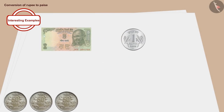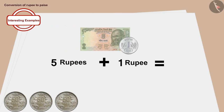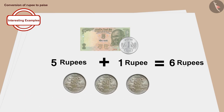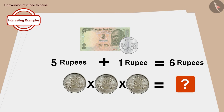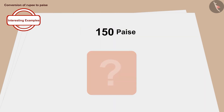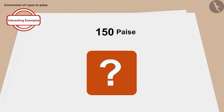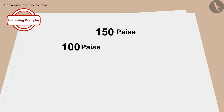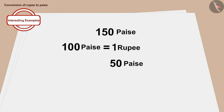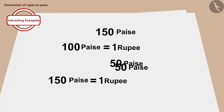That's correct! Here, 5 rupees and 1 rupee added together becomes 6 rupees. And how much is 3 times 50 paise? That is 150 paise. If we write it in rupees, 100 paise is 1 rupee and we have 50 paise left. In this way, 150 paise becomes 1 rupee and 50 paise.